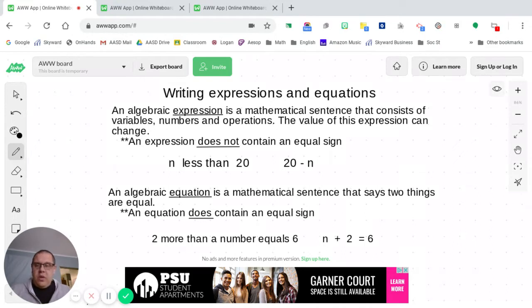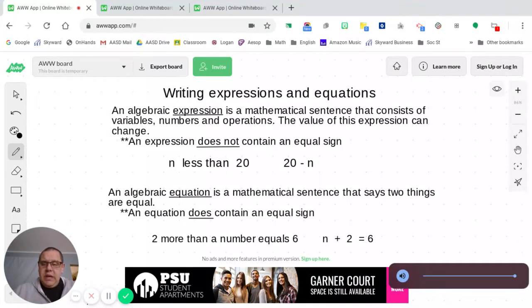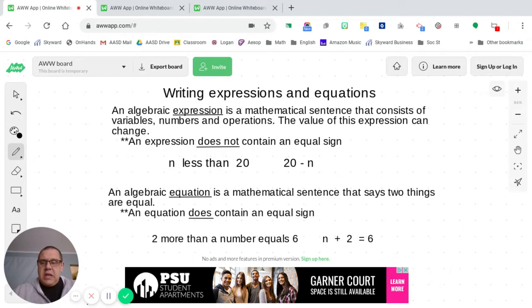The value of this expression can change. So here's one of the key things to remember. An expression does not contain an equal sign. And I've provided two examples there for you. N less than 20, or you also have 20 minus N. And that's what that equals.